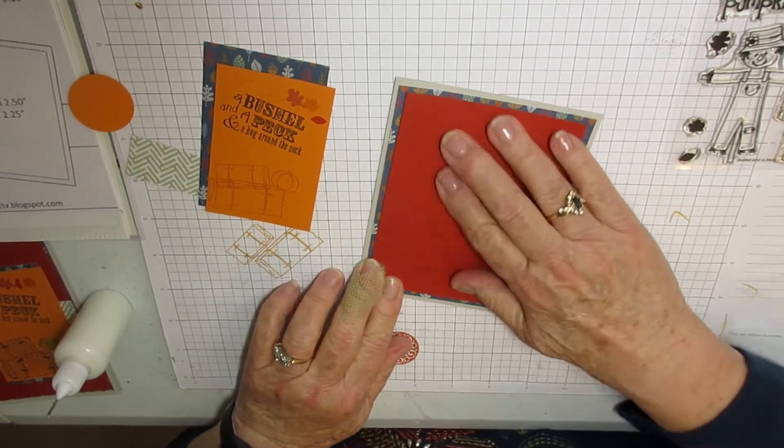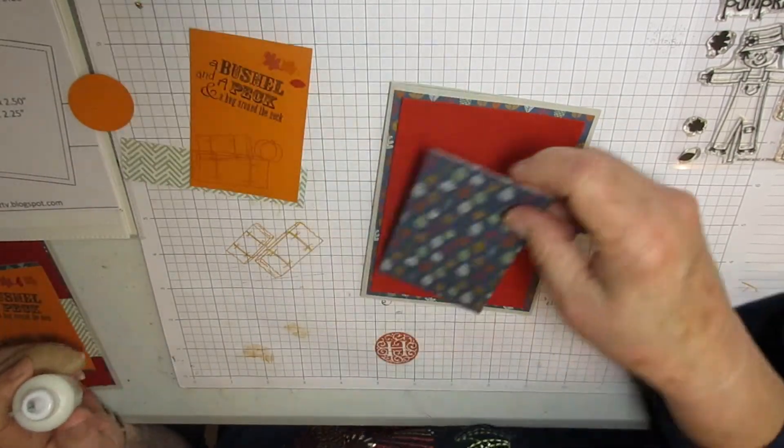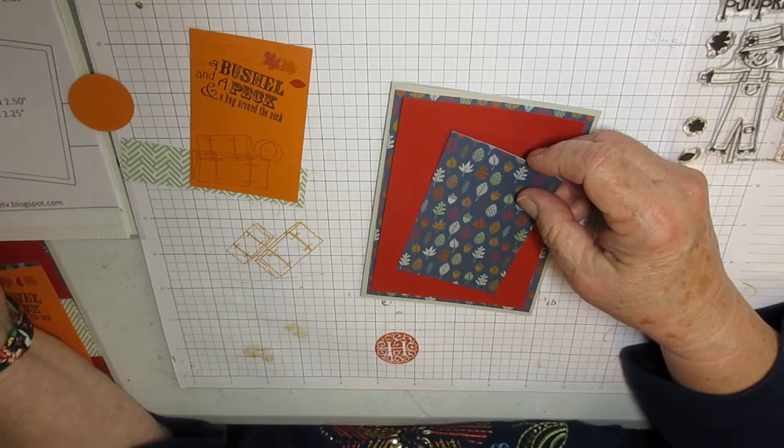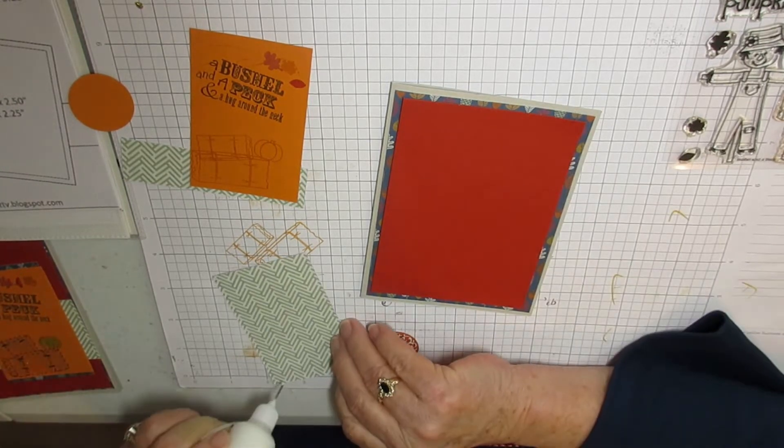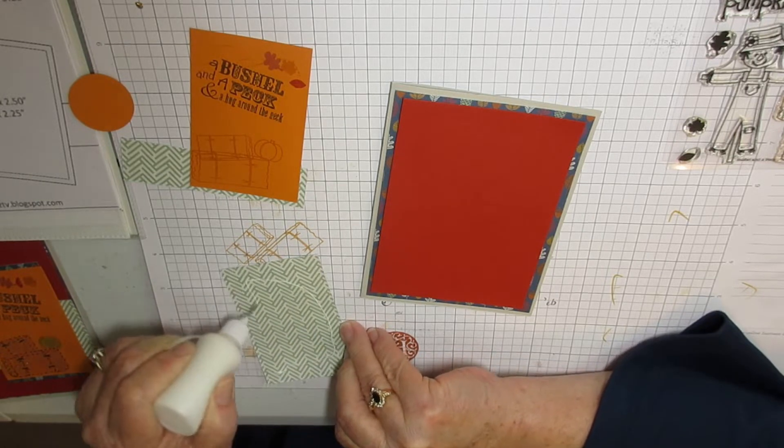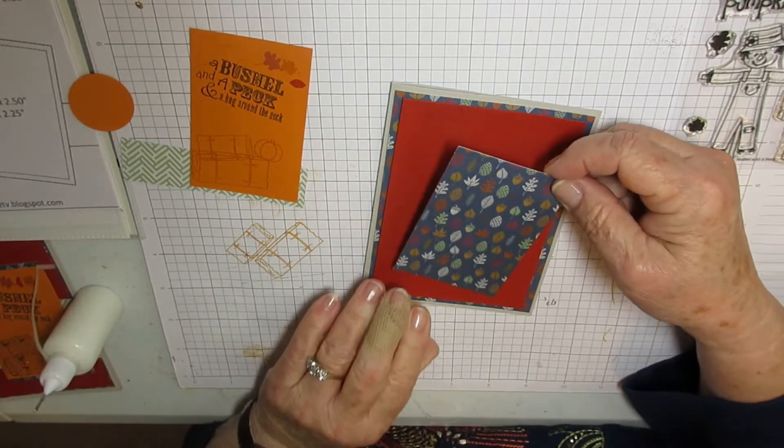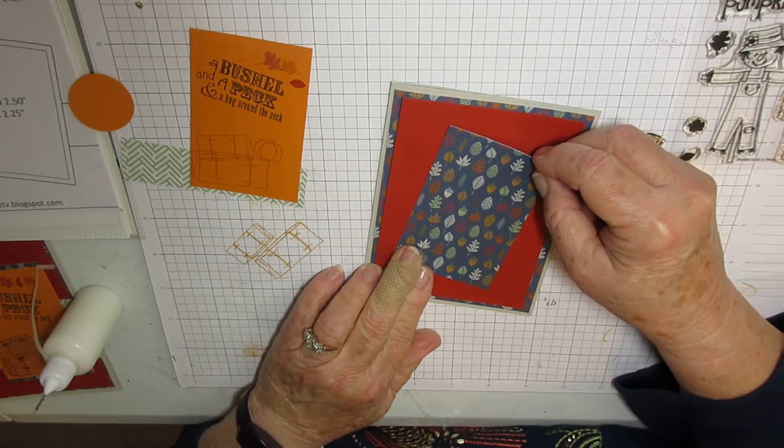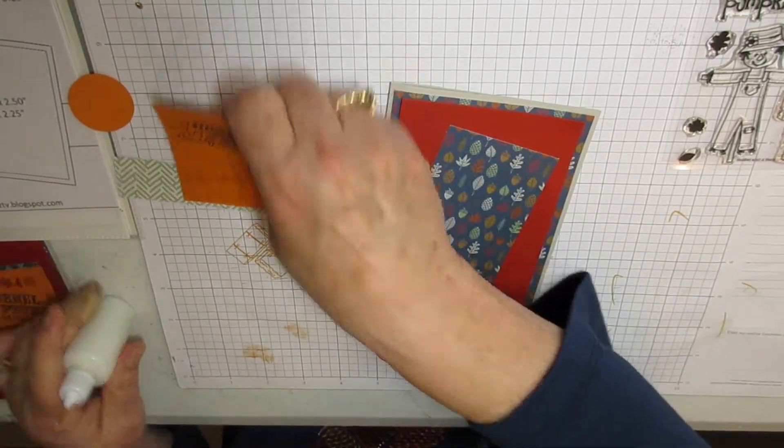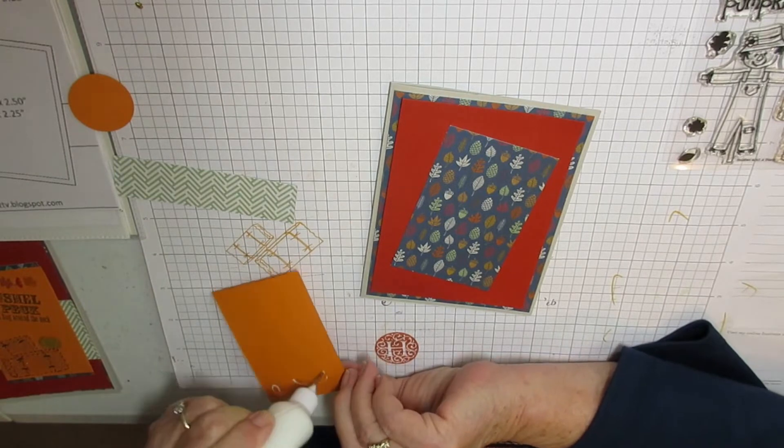This is three and three fourths by five. I actually added an extra layer. This piece goes on next. It is 3.25 by 2.50, or three and a fourth by two and a half. She has hers kind of slanted. I think I'll do that too. I did two cards out of the same design.